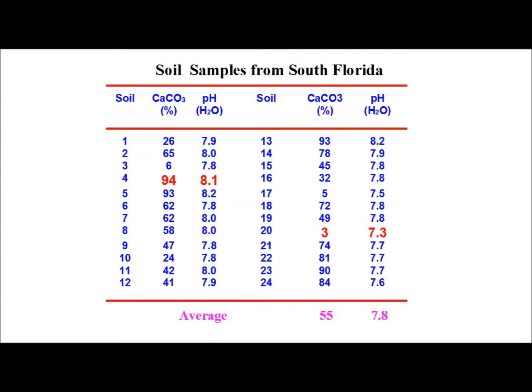In Miami-Dade County soils, we collected representative samples and found the highest calcium carbonate in a potato field with marl soil — about 94% calcium carbonate, with a pH of 8.1. We also found soils from the Everglades National Park, never farmed before, where calcareous concentration is only 3% and pH is relatively low. So calcareous soils can vary widely. On average in Miami-Dade County, it's about 55% calcium carbonate and pH 7.8.